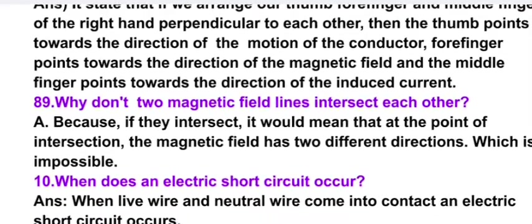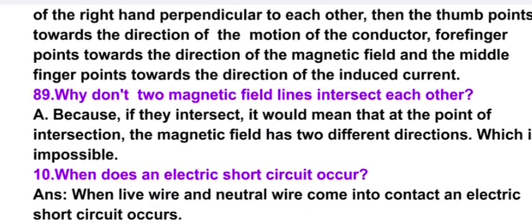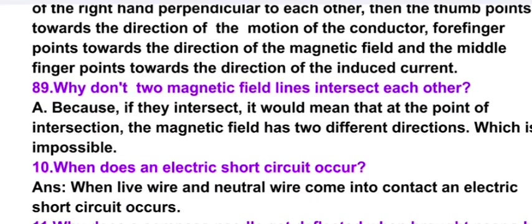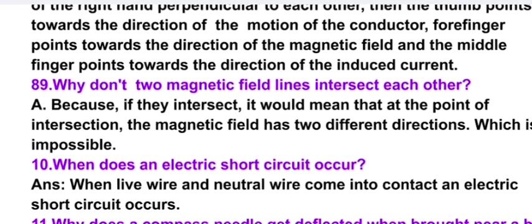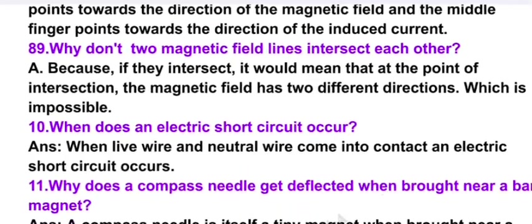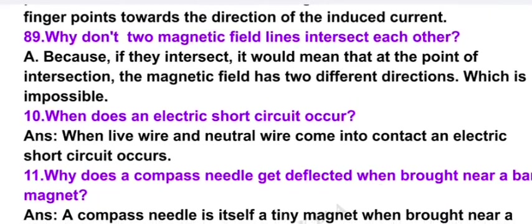Why don't two magnetic lines intersect each other? Because if they intersect, it would mean that at the point of intersection the magnetic field has two different directions, which is impossible.